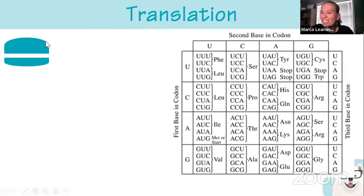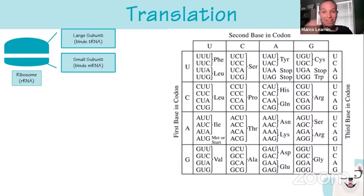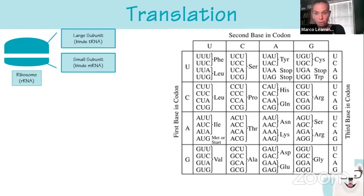In translation, the ribosome has two parts: a large subunit and a small subunit. The large subunit binds the tRNAs, which have an anticodon that pairs with codons on the mRNA and carry amino acids. The small subunit binds the mRNA. The ribosome itself is made up of rRNA plus protein. All three types of RNA — tRNA, mRNA, and rRNA — are used in translation.